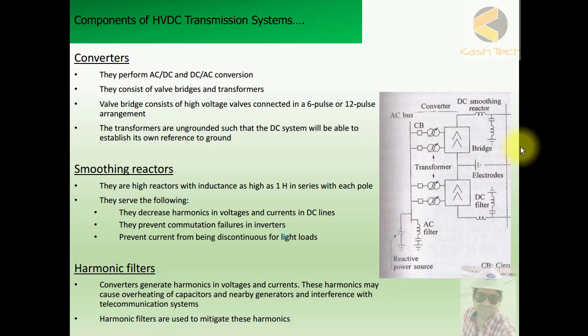This is a very important point: the transformers used in DC systems must be kept ungrounded because the DC system has to use its own ground. Smoothing reactors are large reactors with inductance as high as 1 Henry, connected in series with each pole. In the diagram here you can see the DC smoothing reactors, the DC filters connected after conversion from AC to DC, and the AC converter connected to the AC side of the network.